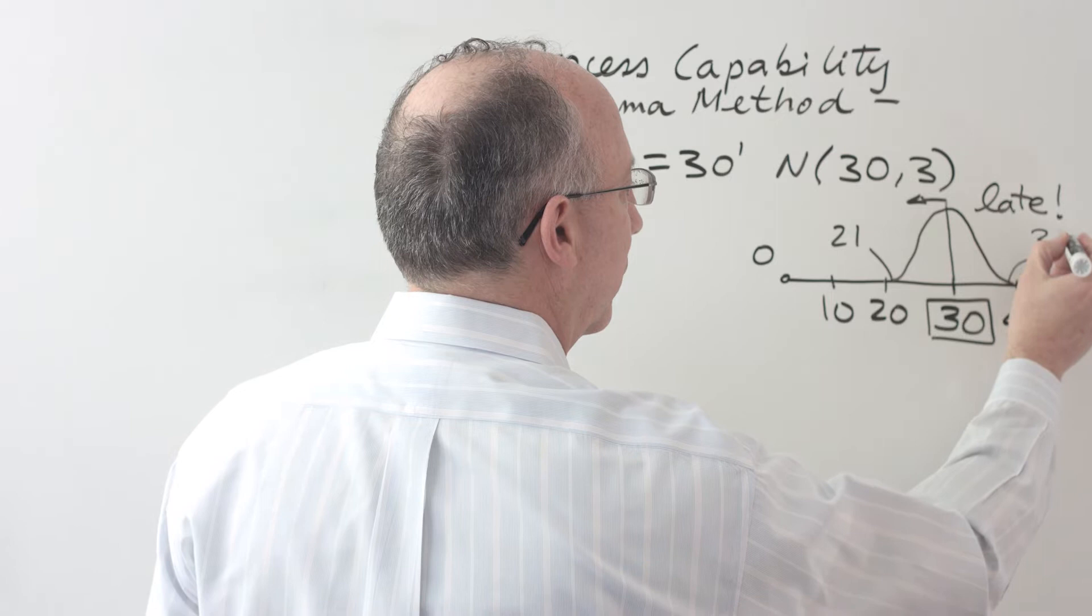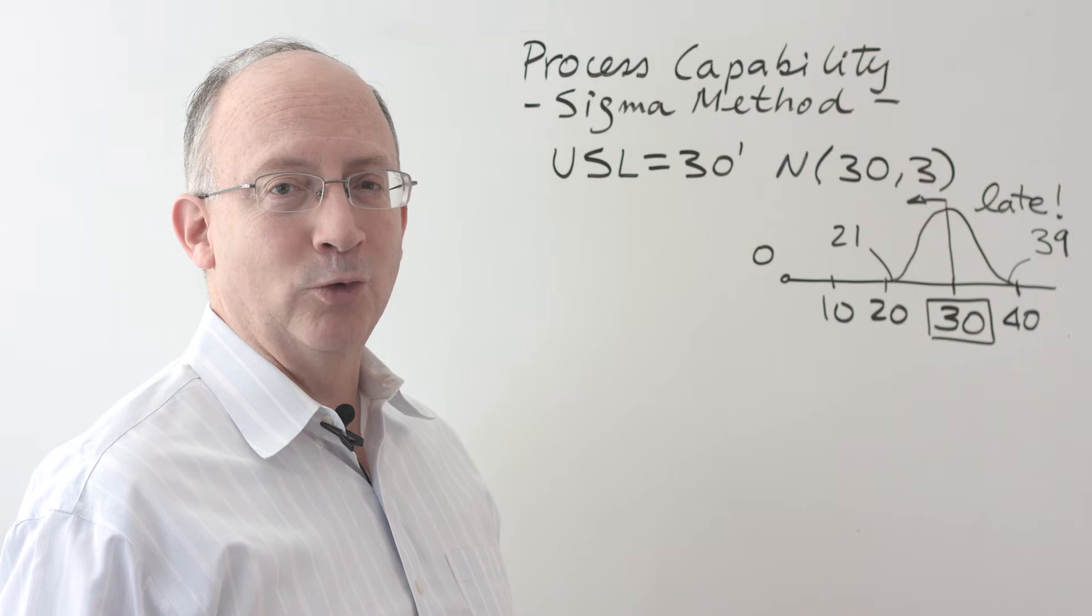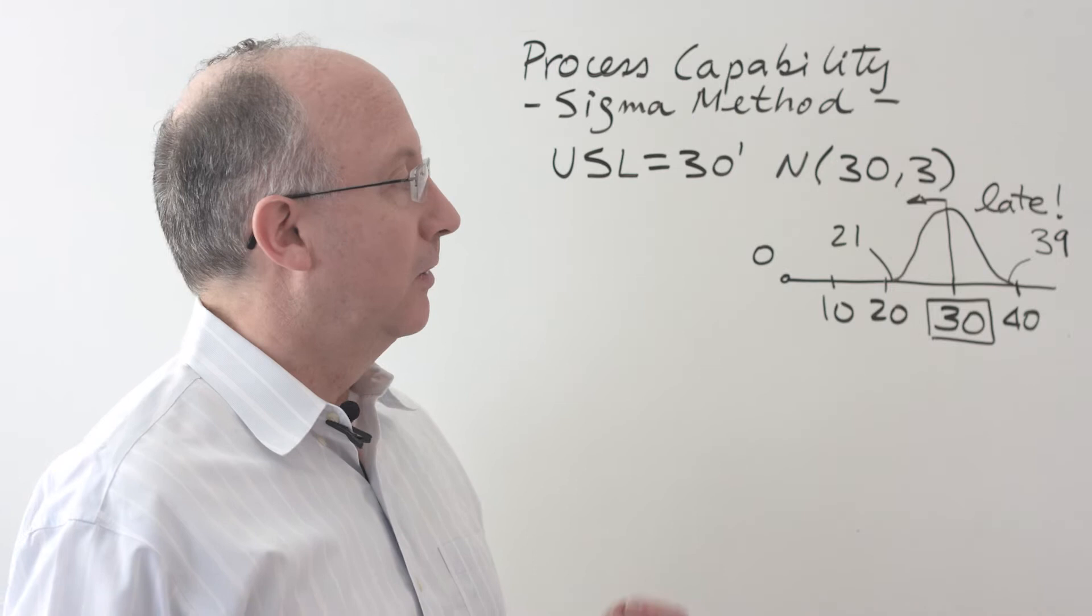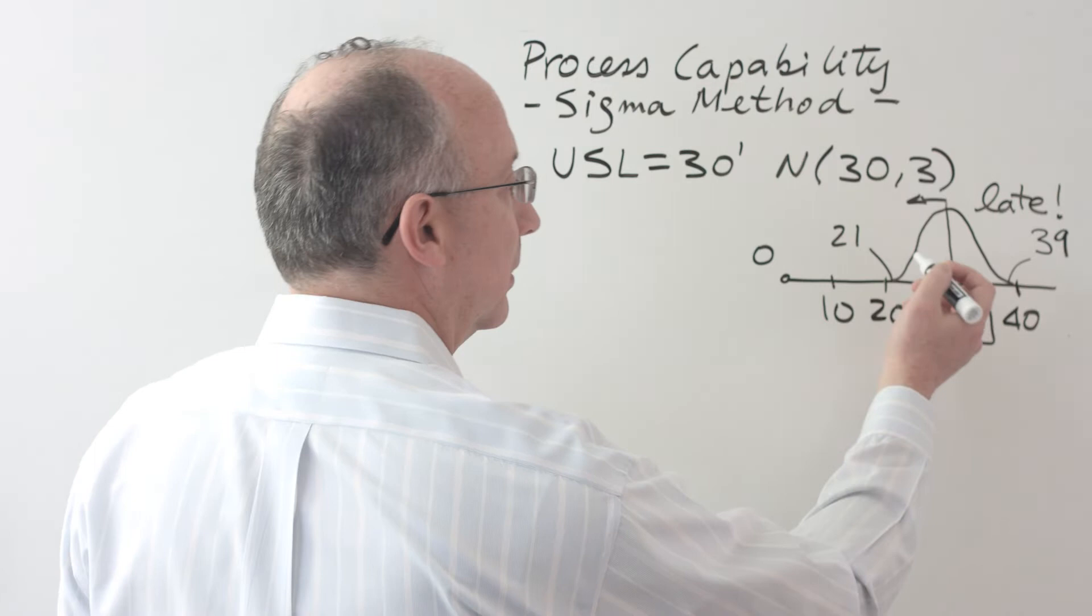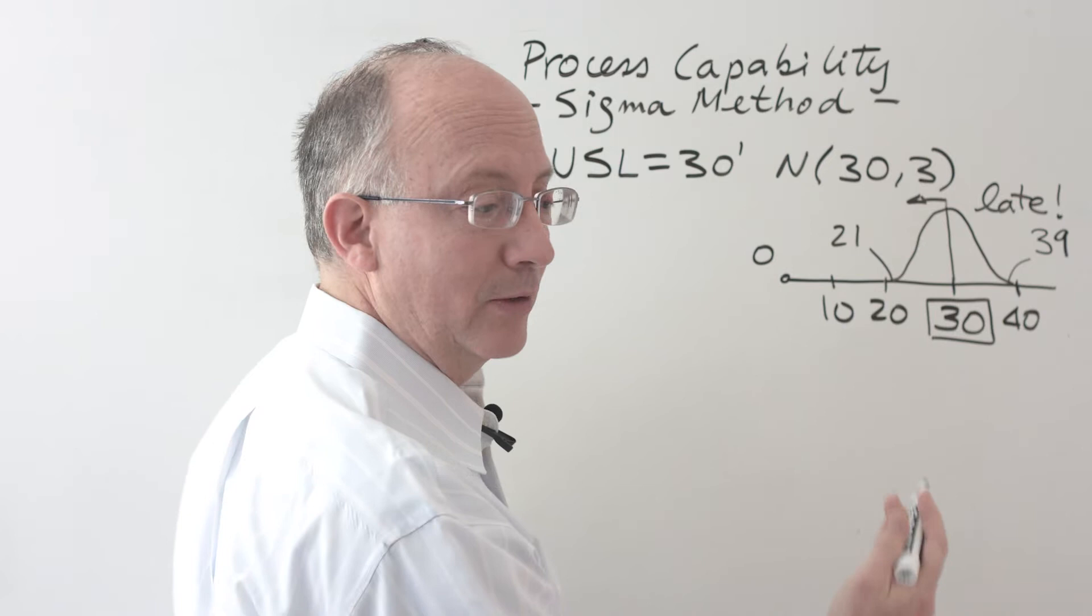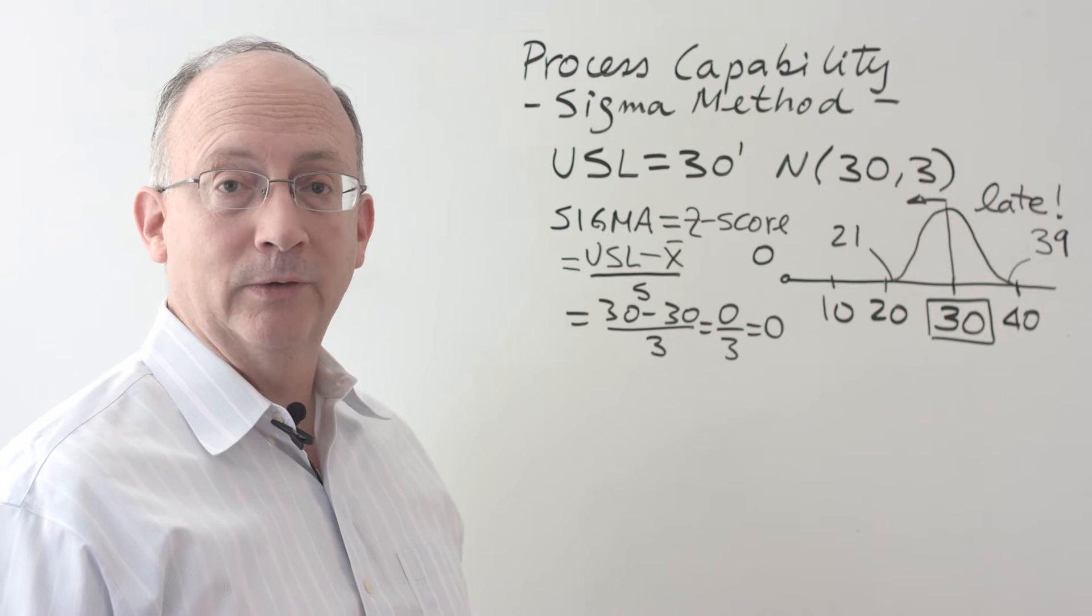Now, with something like this, where it just so happens that the average is exactly the same as the upper specification limit, we almost don't need to make any calculations in order to know what is the yield and what is the percentage defective, if we remember that the normal distribution is symmetric with respect to the average. That means that in this case, the same amount of on-time delivery is going to be the same as late delivery. That is a 50-50. So this is a process that is operating at a sigma level of zero.